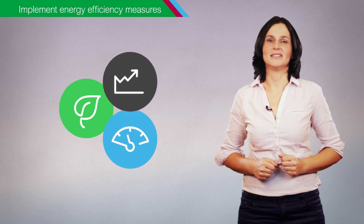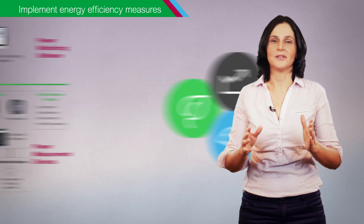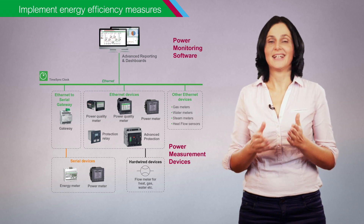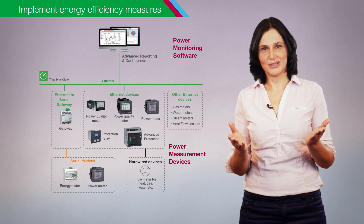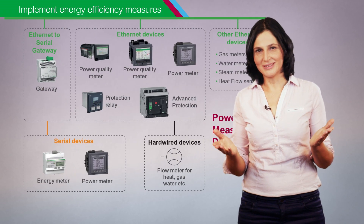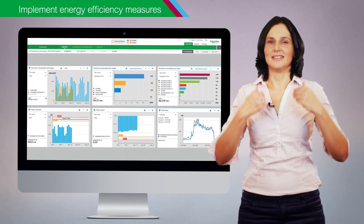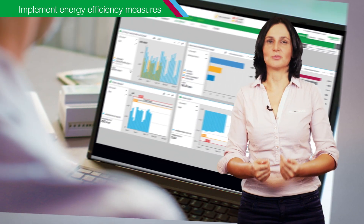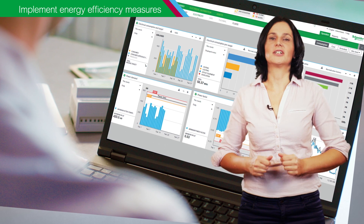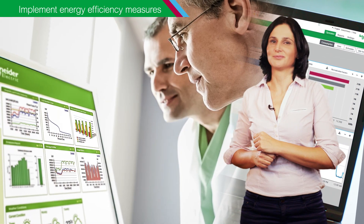Active energy efficiency is about taking control of energy use. It requires two things: continuous monitoring using power measurement devices and power monitoring software, and active management including people in charge of an action plan and follow-up on results.